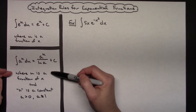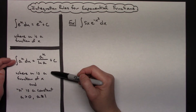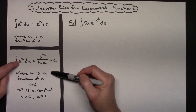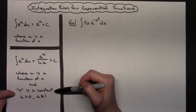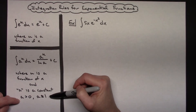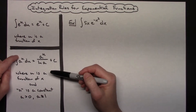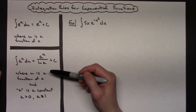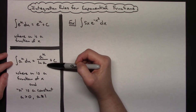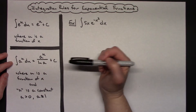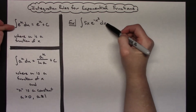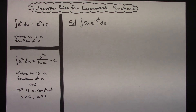Another formula is when we are integrating a to the u du. In this case u again is going to be a function of x, but your a will be a constant — a number. It must be greater than zero, but it cannot be equal to 1. So this might look like integrating 6 raised to the 2x or something along those lines. The formula then would be a to the u over the natural log of a plus c. I will do a couple examples with the first formula, and then an example with the bottom formula as well.